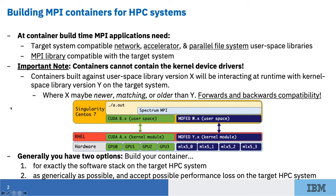When building a container for an MPI application, you'll need access to the user space libraries for the network accelerator and parallel file system on the target system or systems. This will allow you to build the necessary support into your MPI implementation. If you're targeting support for multiple systems, you may need to have multiple sets of these libraries available at build time, at least in your stage one container.